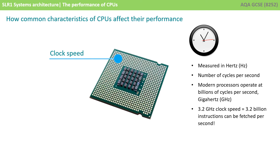You can't strictly say it's one to one. For example, you can't say that with a three gigahertz processor, there are three billion cycles, and therefore three billion instructions being executed per second — but it isn't far off. And if you stop to think about that for a moment, that's really, really quite incredible: the speed at which modern CPUs are now able to operate.